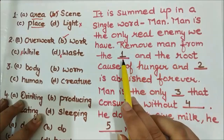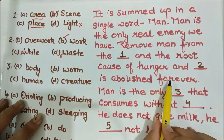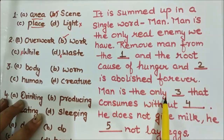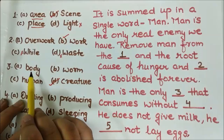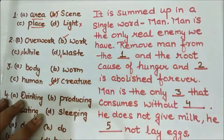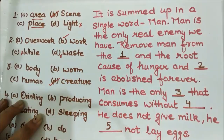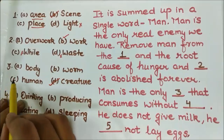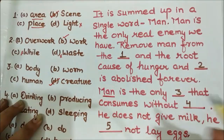The third blank: 'Man is the only ___ that consumes.' Without thinking, I'm putting 'creature,' because man is not the only body that consumes — insects, bacteria, and so many animals consume too. 'Worm' refers to only one entity. 'Human' we cannot use because we are considering man as a whole community. So: man is the only creature that consumes.